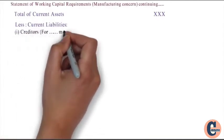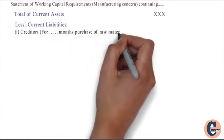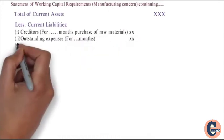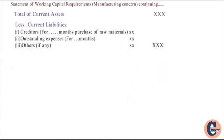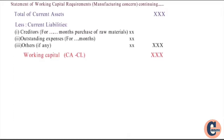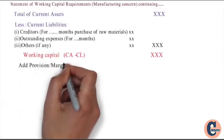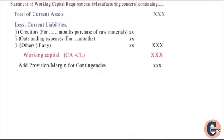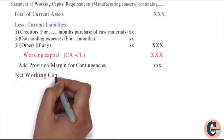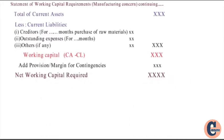Current liabilities include: first, creditors — four months' purchase of raw material; second current liability, outstanding expenses — four months; third, others if any. We take the total of current liabilities. Working capital equals current assets minus current liabilities, amount shown in outer column. Then add provision or margin for contingencies to get net working capital required. Working capital plus margin for contingencies equals net working capital required.